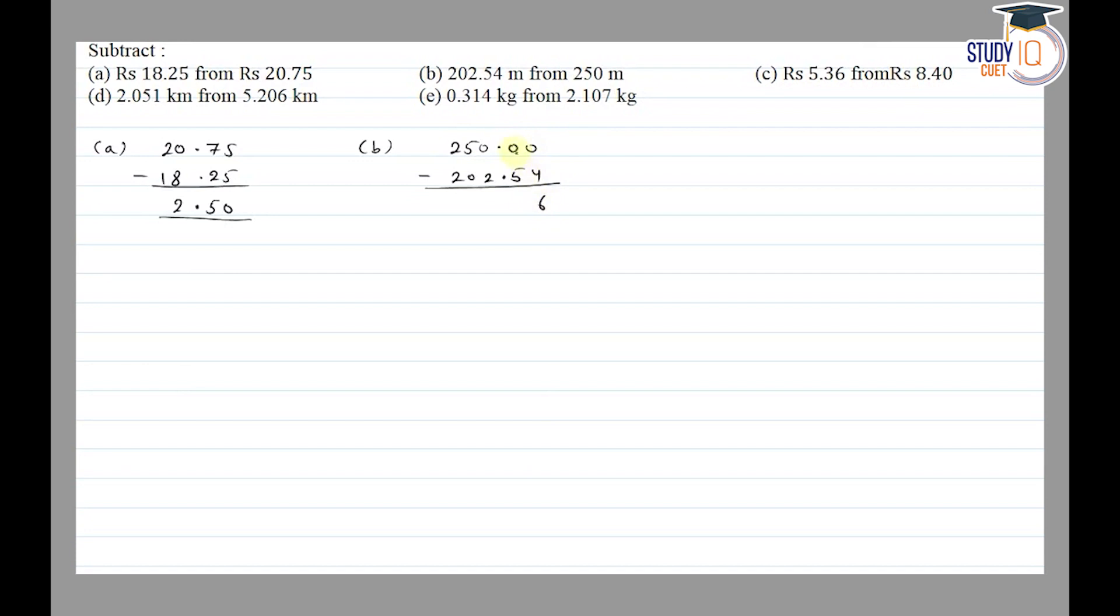Here 9 minus 5 is equal to 4. Here 9 minus 2 is equal to 7. Here we will borrow, 4 minus 0 is equal to 4. And 2 we will subtract here, so 0.